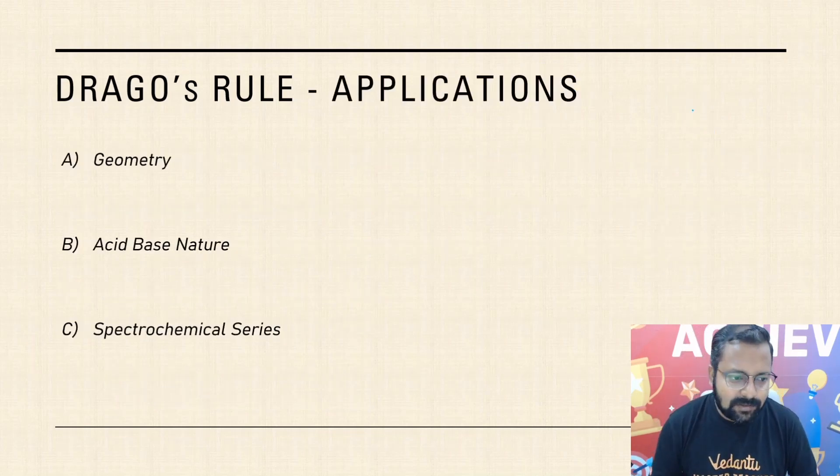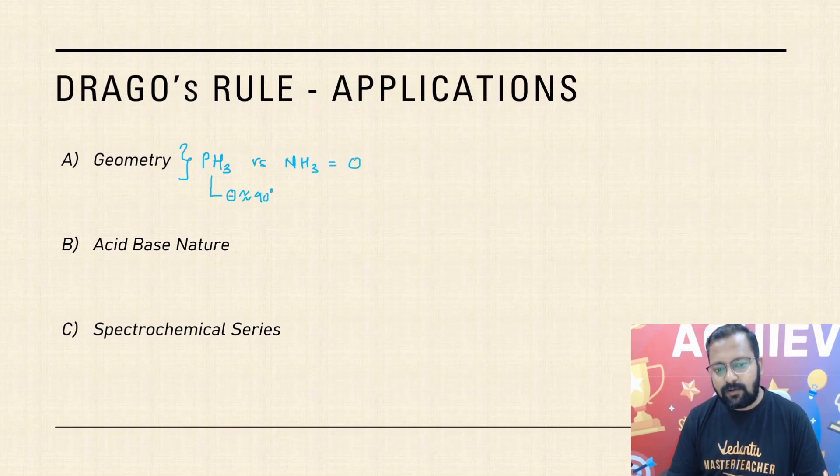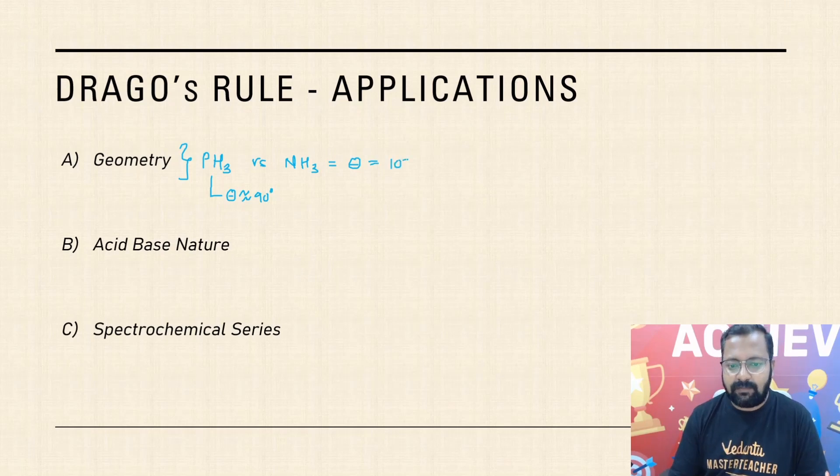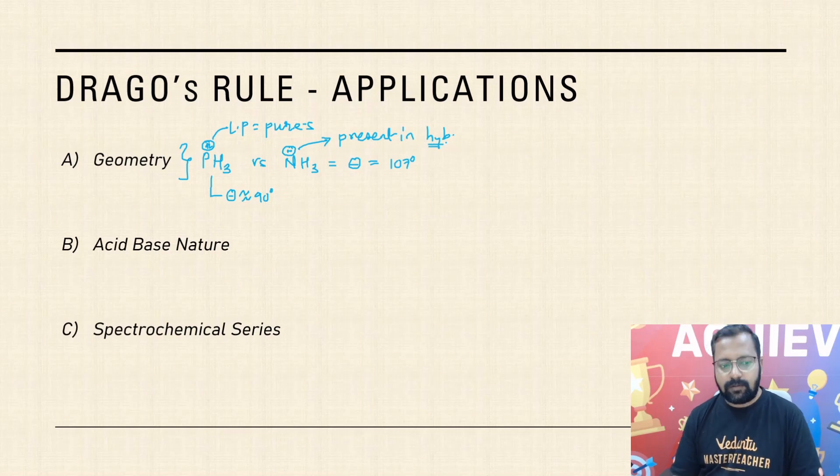Let us look at certain applications. In geometry applications, if you have taken PH3 versus NH3, in PH3 the theta value is close to 90 degrees. And here the bond angle is 107 degrees because of hybridization. Lone pair over here is present in pure S, and lone pair over here is present in hybridized orbital.